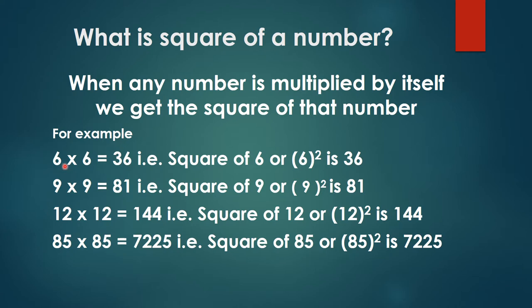Say for example, 6 multiplied by 6 is equal to 36. Another way of writing this is square of 6, or 6 raised to the power 2. This is called 6 squared is 36. Similarly, 9 multiplied by 9 gives us 81, that is square of 9 or 9 squared is 81. 12 multiplied by 12 is equal to 144, that is square of 12 or 12 squared is 144.